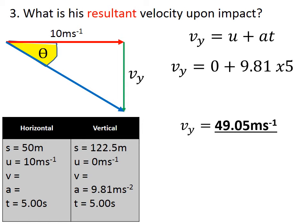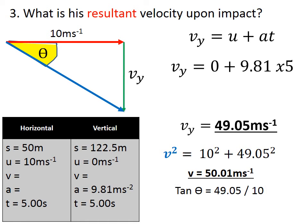Now we've got to figure out the angle and the magnitude. Using Pythagoras, we check the values we have so far, and that will give us a resultant velocity of 50.01 meters per second. Then using trigonometry, we figure out the angle which will be 78.48 degrees.